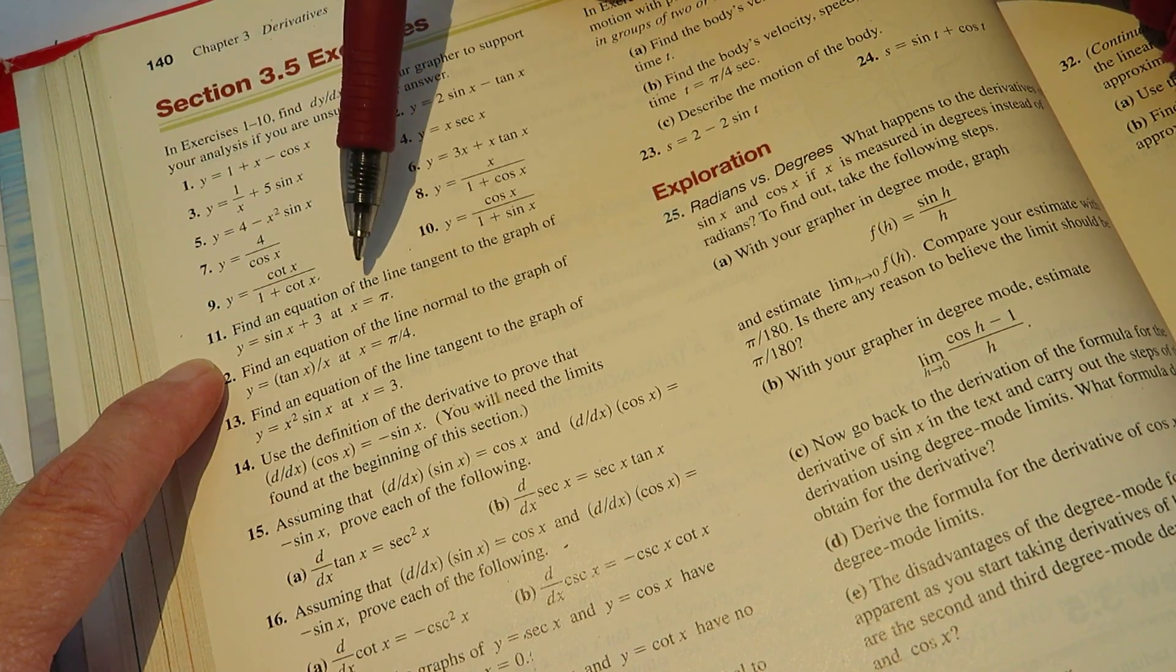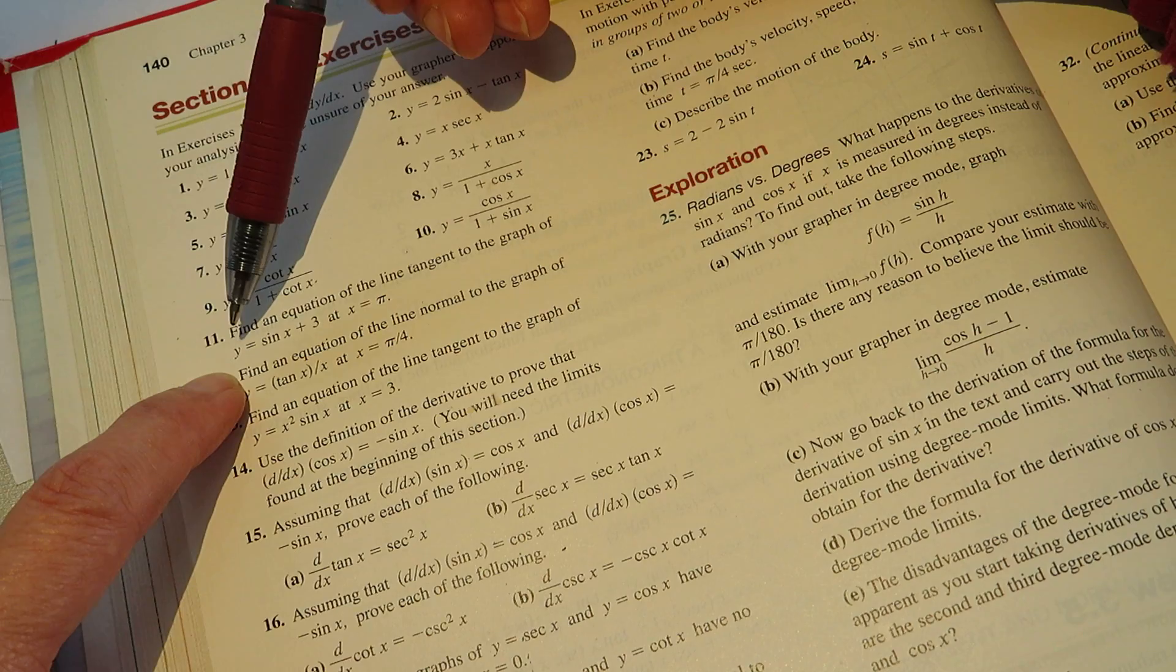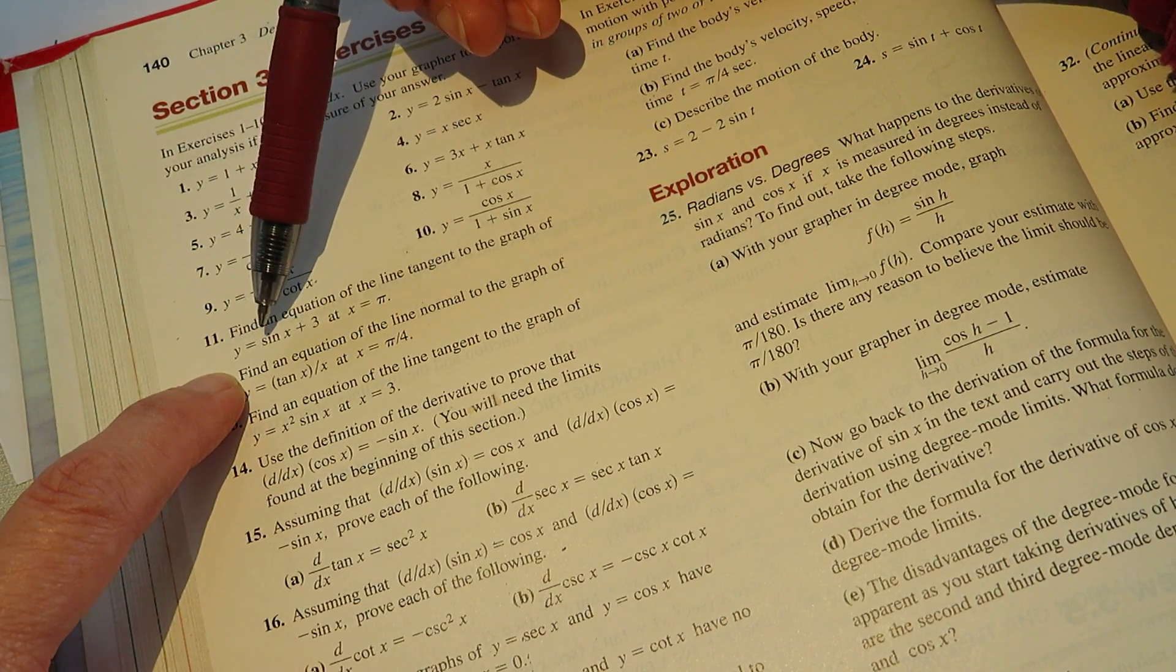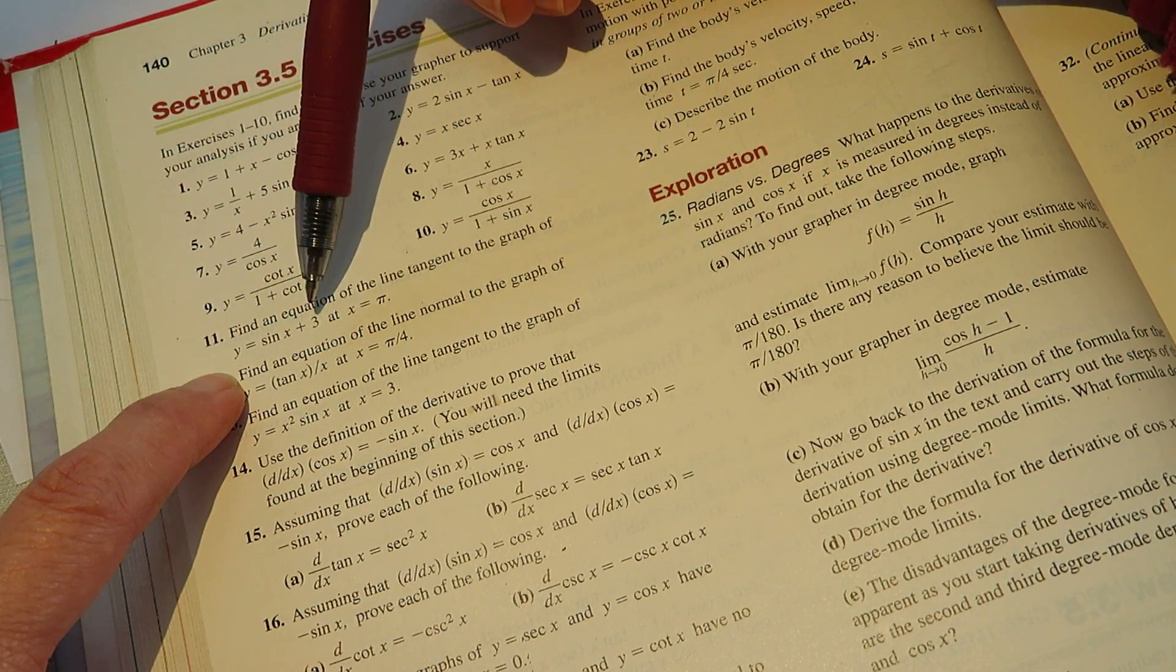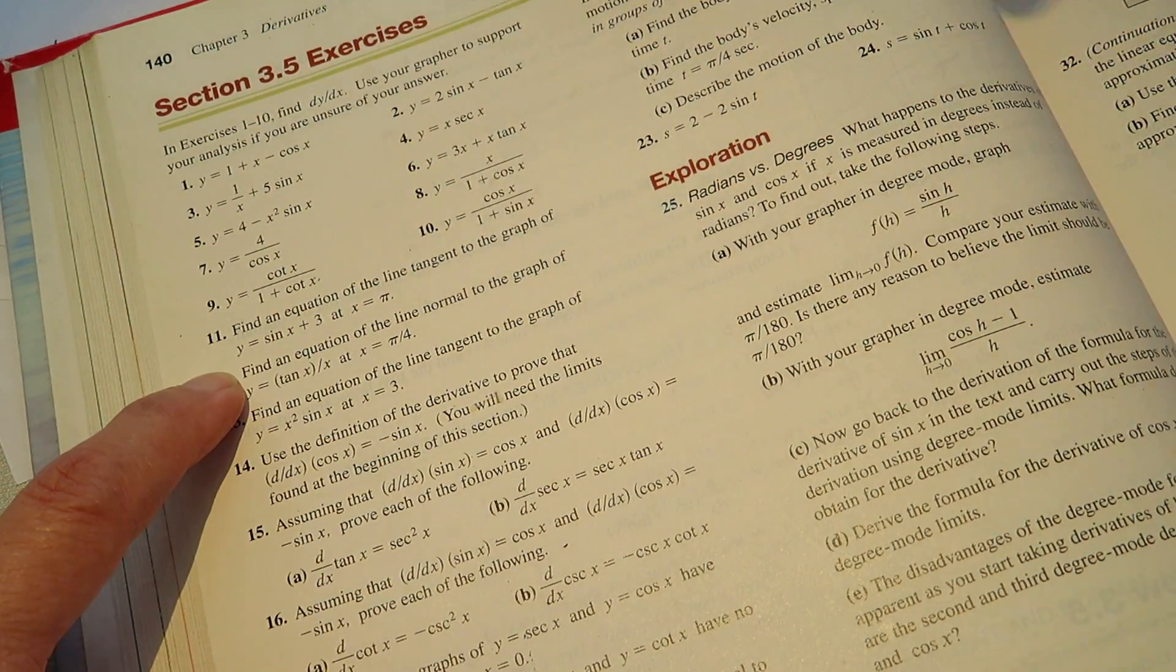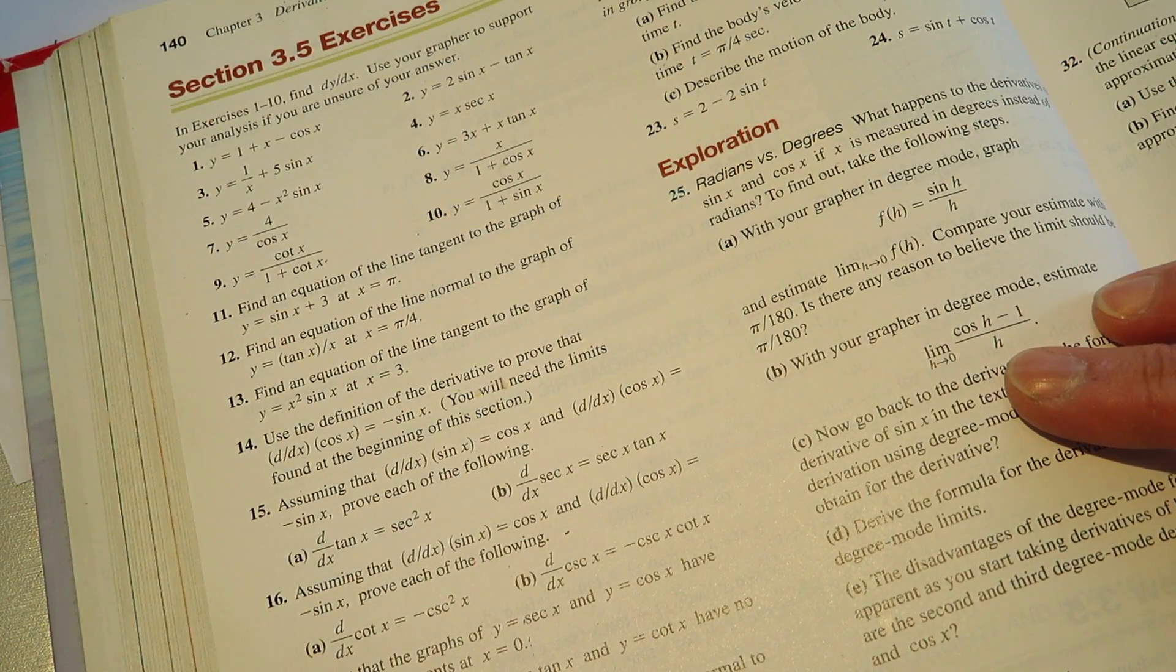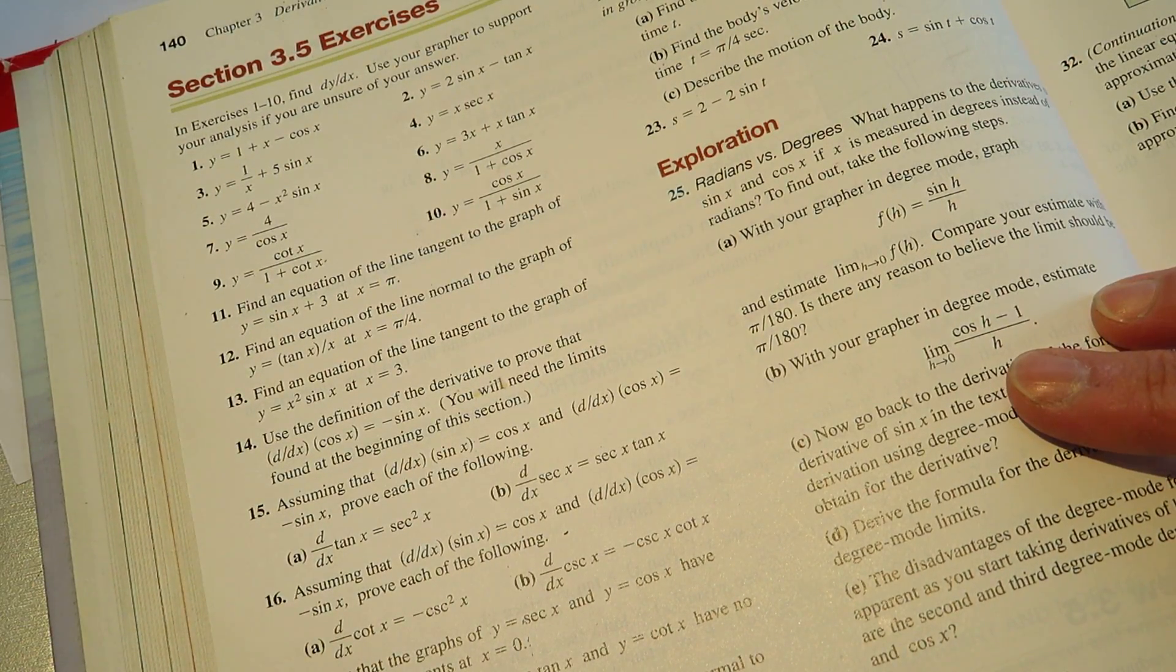Find an equation of the line tangent to the graph of y equals sin x plus 3 at x equal to pi. Okay, so what we want to do is find an equation of the tangent line.